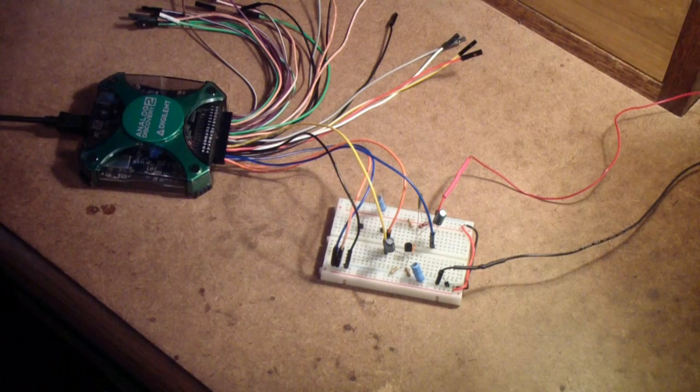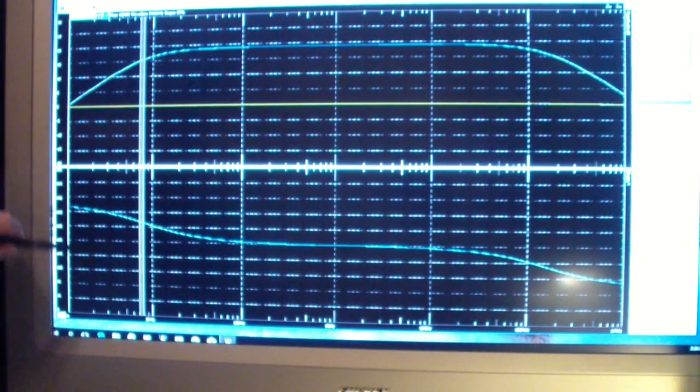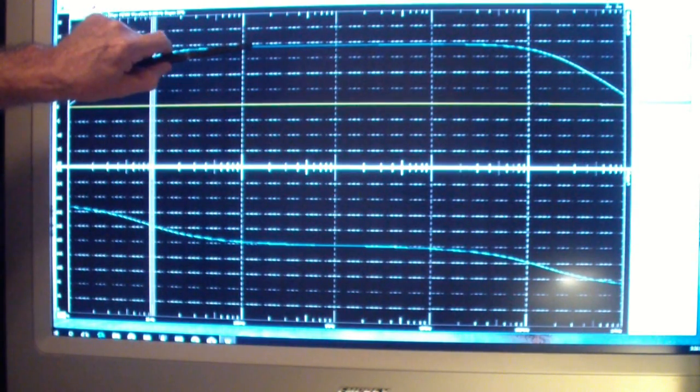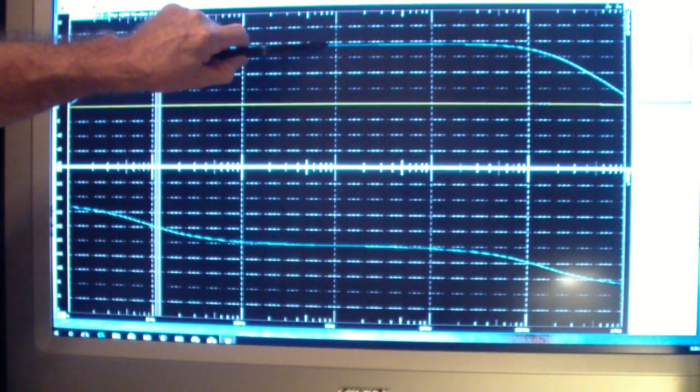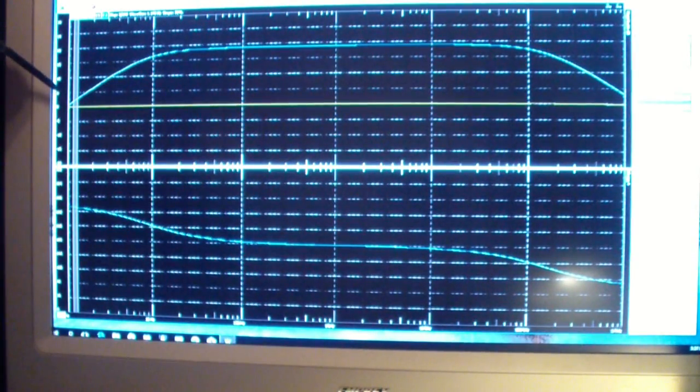On the far left is 1 Hz. This line is 10 Hz. This is 100 Hz. This is 1000 Hz. 10,000 Hz. 100,000 Hz.